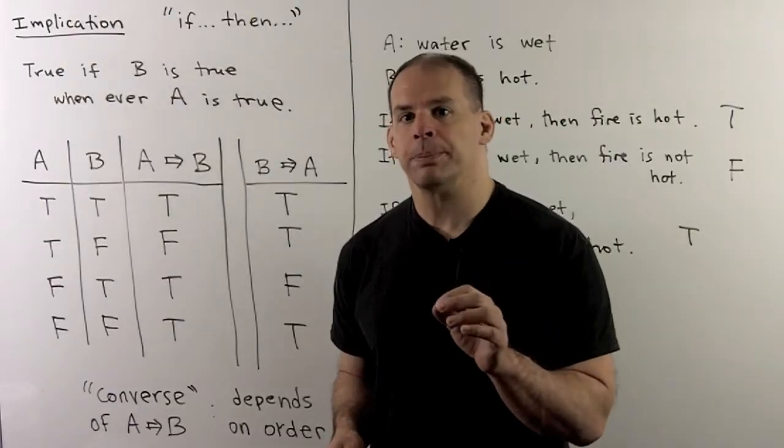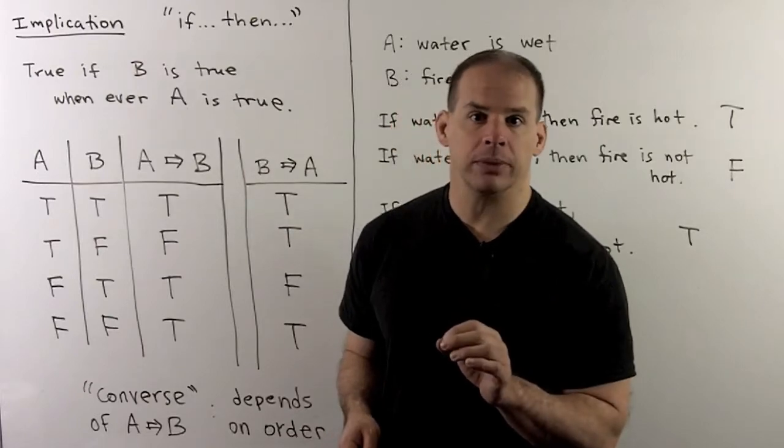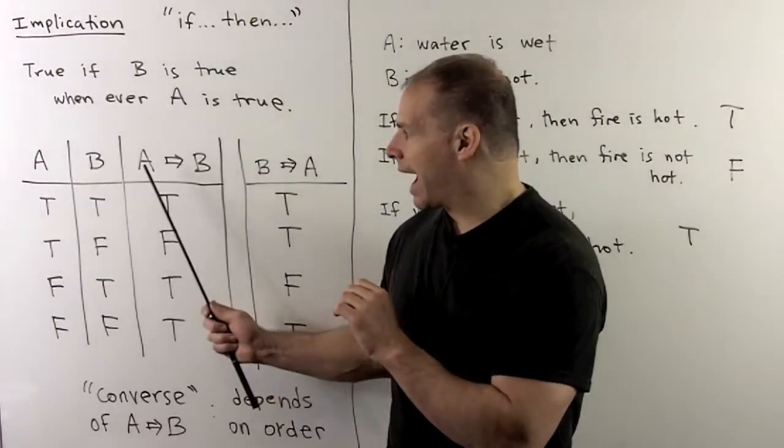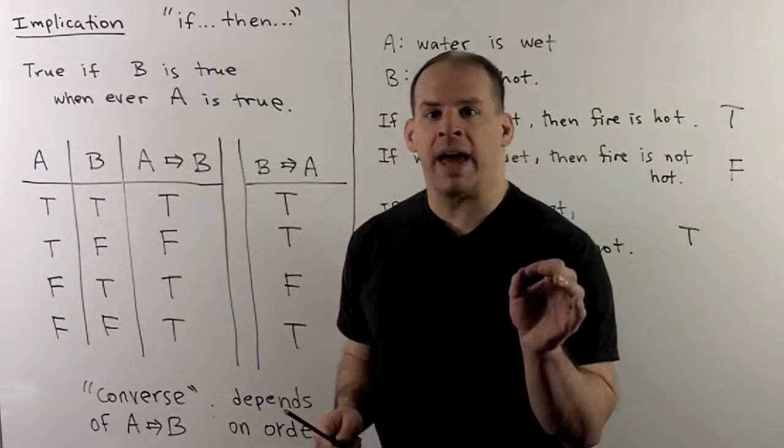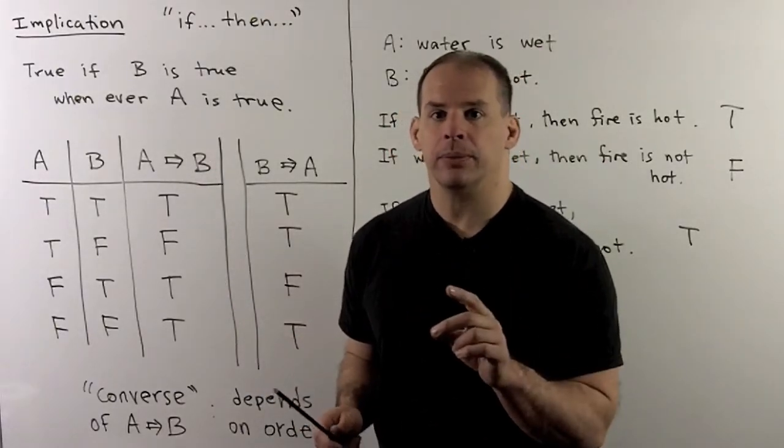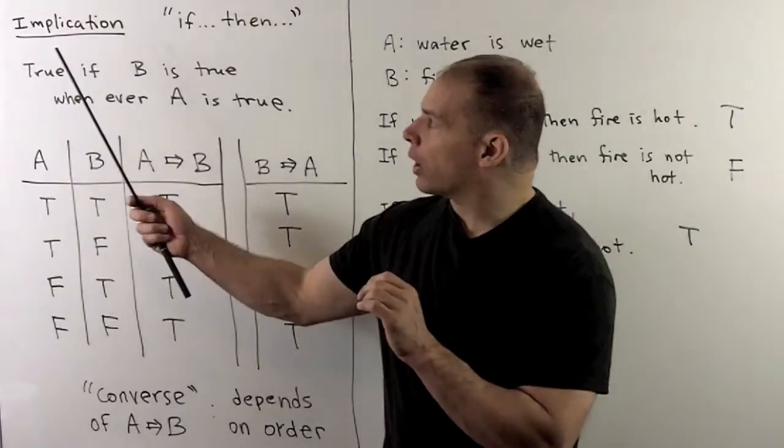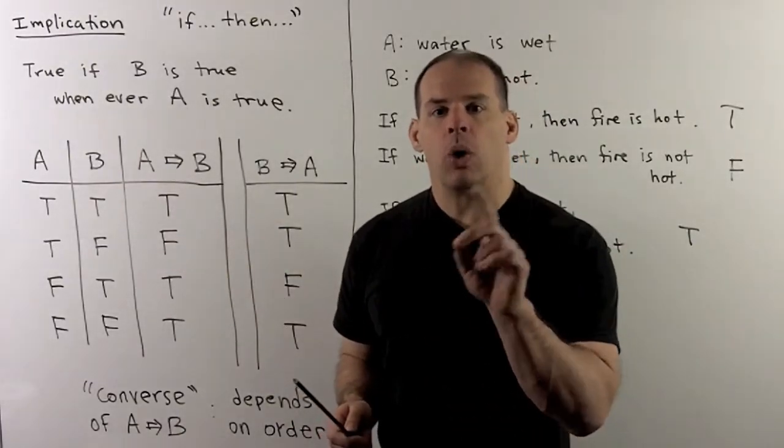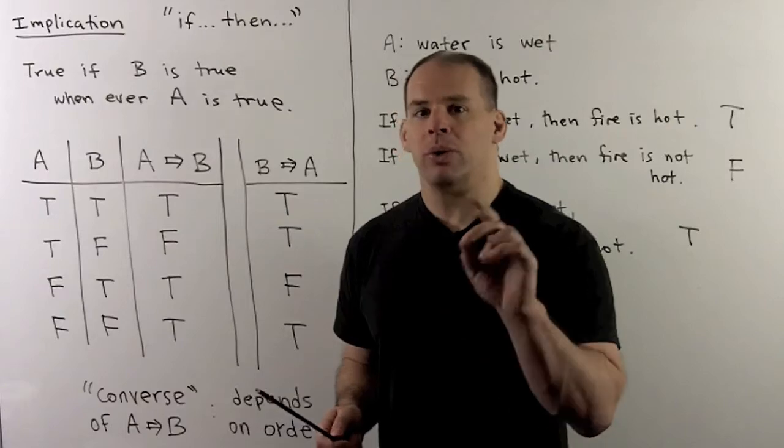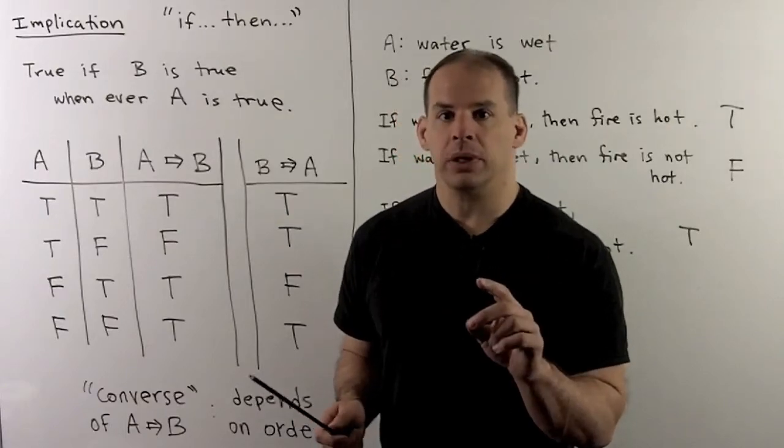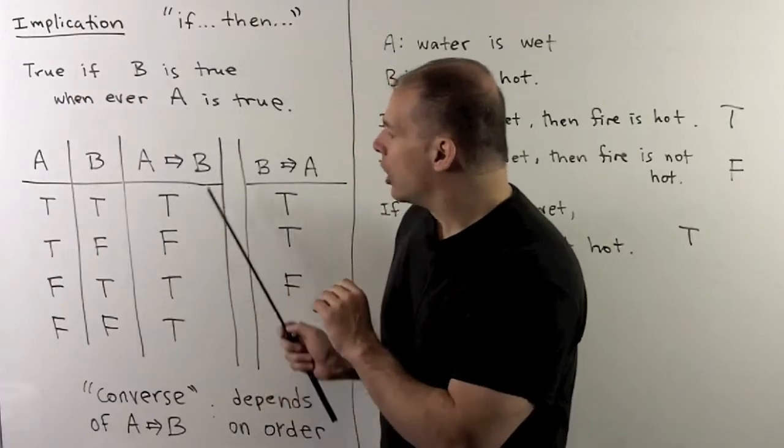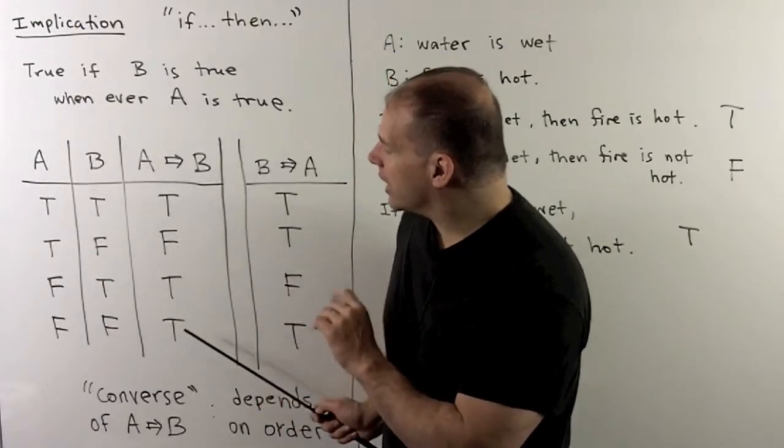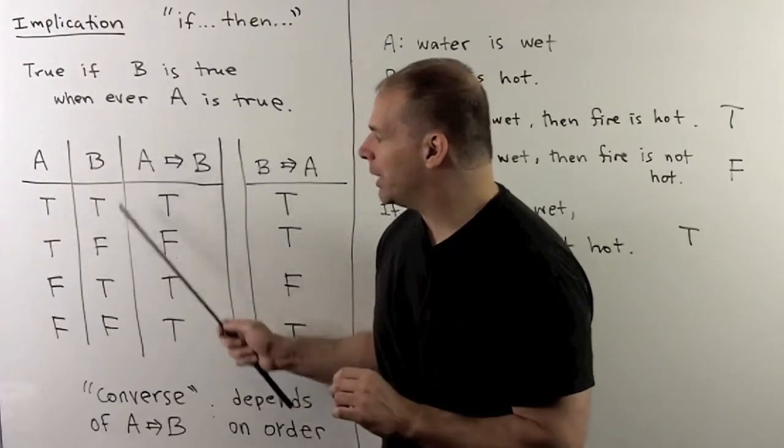For the last operation, we have implication. So, we'll write this with an arrow. We say A implies B, or if A, then B. Now, for A implies B to be true, we'll want that B is true whenever A is true. So, if we set up the truth table, we'll have true always except for when A is true and B is false.